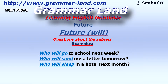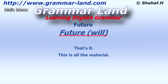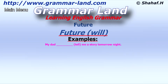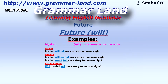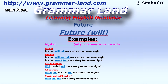Examples: 'Who will go to school next week?' 'Who will send me a letter tomorrow?' 'Who will sleep in a hotel next month?' Now let's do some more examples. 'My dad will tell me a story tomorrow night.' Negative: 'My dad will not tell me a story tomorrow night,' or 'My dad won't tell me a story tomorrow night.' Yes/no question: 'Will my dad tell me a story tomorrow night?' WH question: 'What will my dad tell me tomorrow night?' Question about the subject: 'Who will tell me a story tomorrow night?'